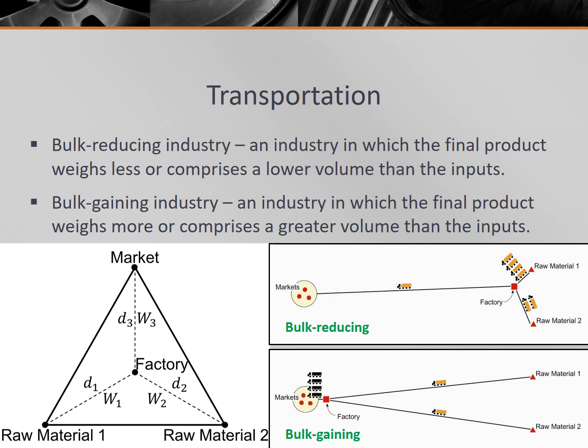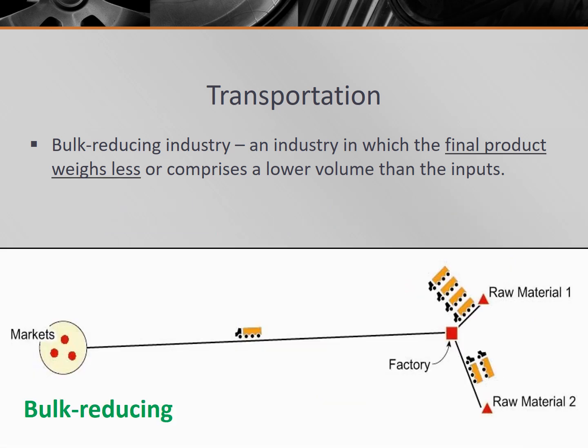Bulk reducing industries are industries in which the final product weighs less or comprises a lower volume than the inputs. These are also called weight losing industries, raw material oriented industries, or raw material dependent industries. In an industry where the raw materials are heavier or larger, the factory is likely to be located near the raw materials, because that will shorten the distance the heavier object must be transported.